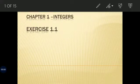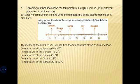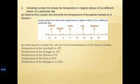Hello everyone. Let us today start Chapter 1: Integer Problem Solving, Exercise 1.1. The first problem in the exercise: the following number line shows the temperature in degree Celsius at different places on a particular day. Observe this number line and write the temperature of the places marked. By observing this number line we can find the temperature of the cities as follows.